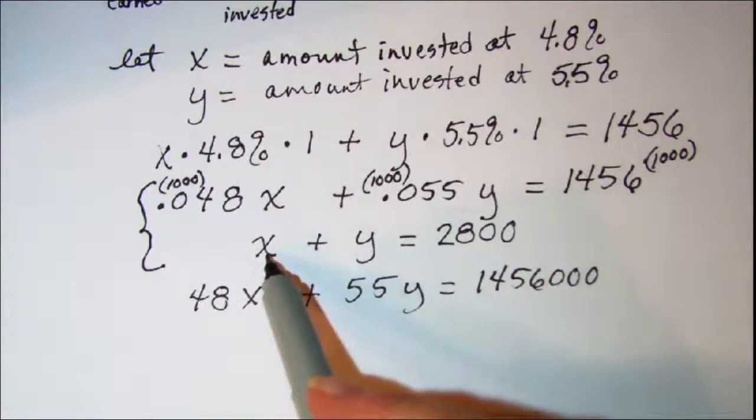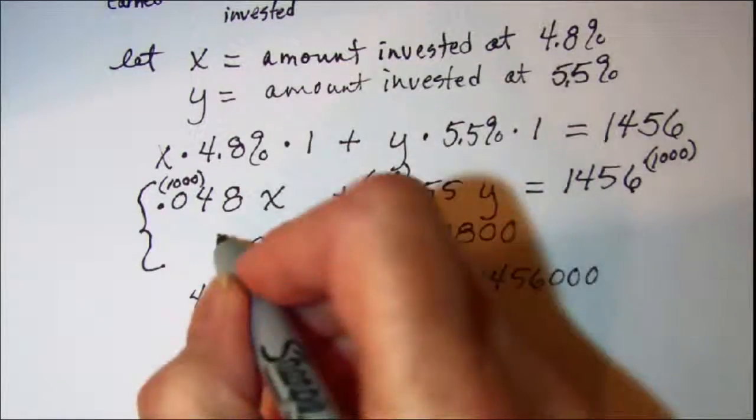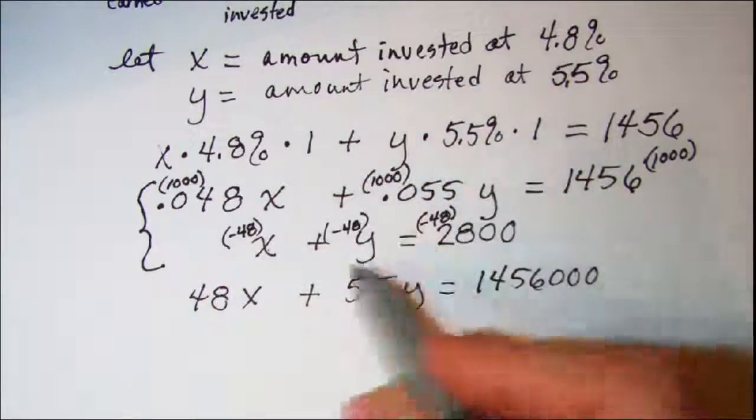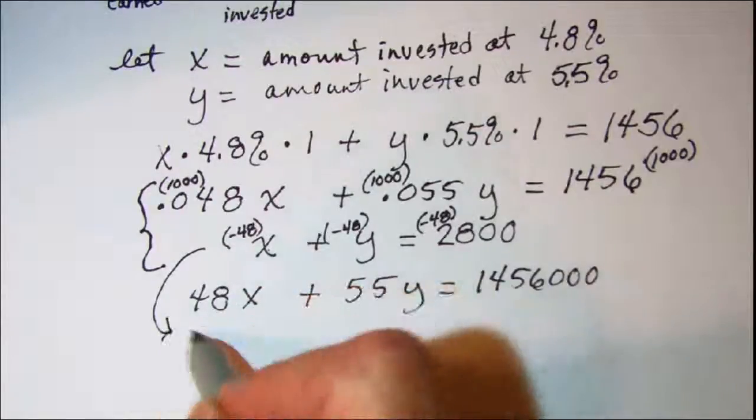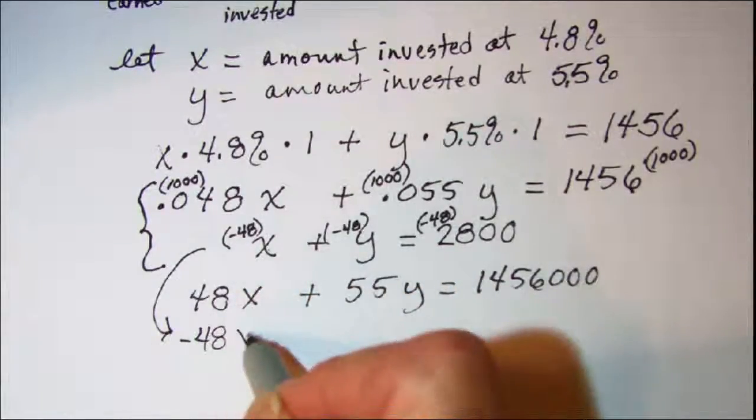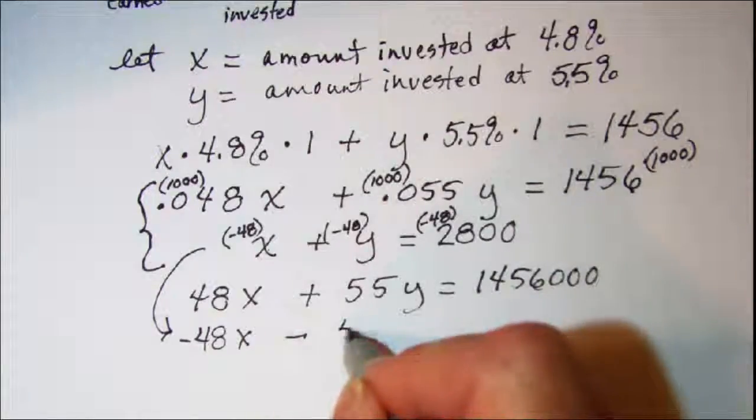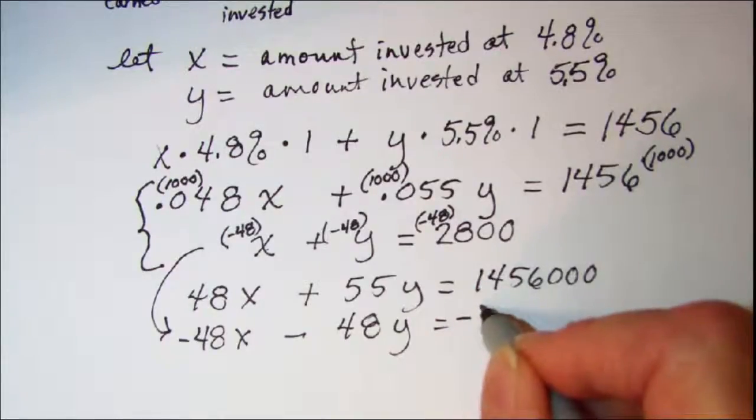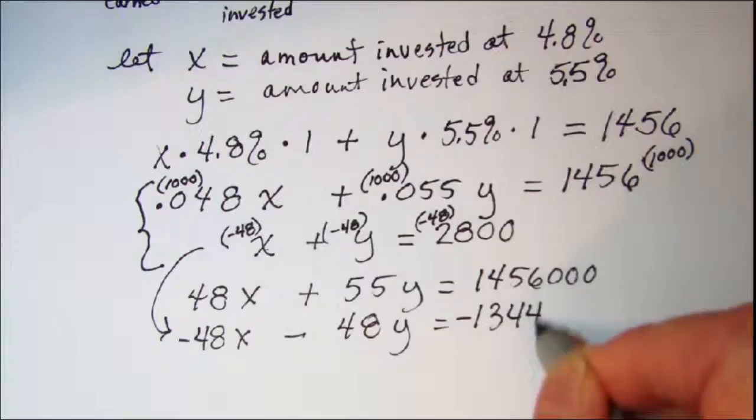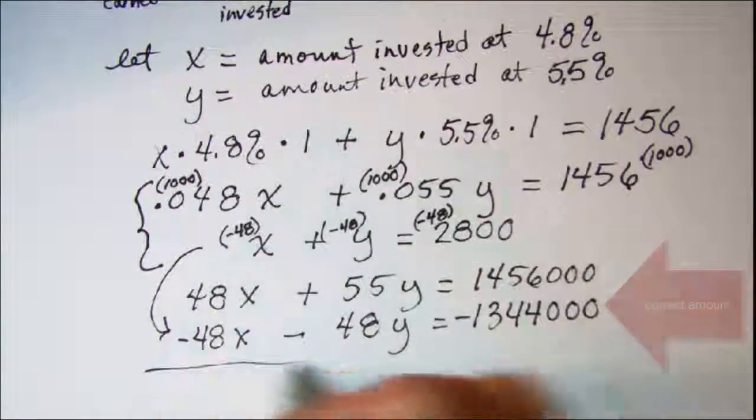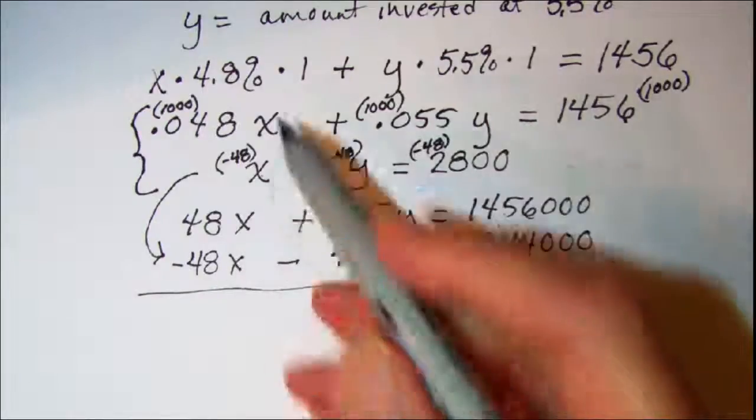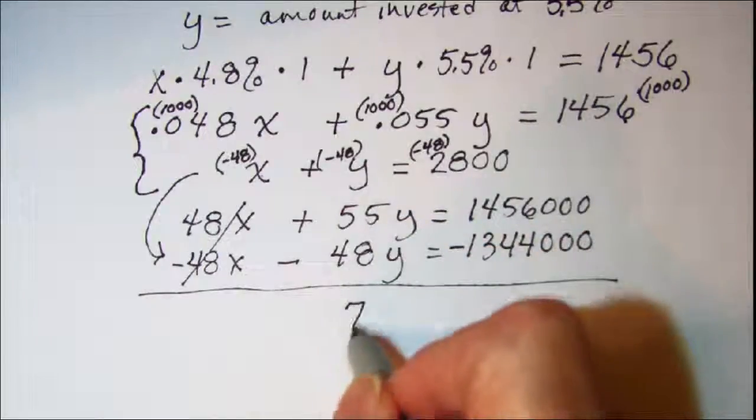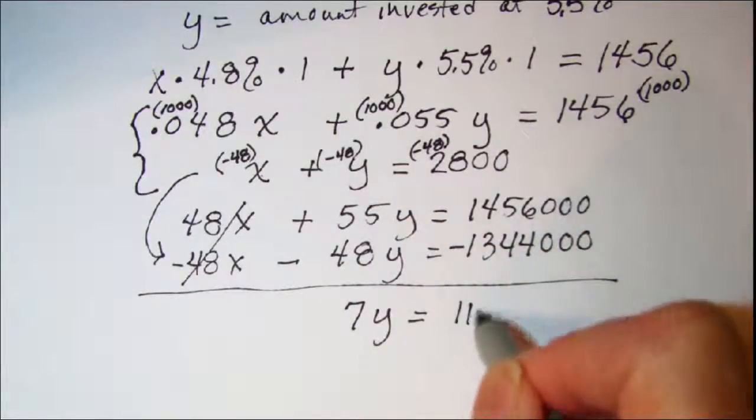So I'm going to multiply every term here by negative 48. So this equation then becomes negative 48x minus 48y equals negative 1,344,000. So adding these two equations together we can see that this term cancels. And I have 7y equals 112,000.